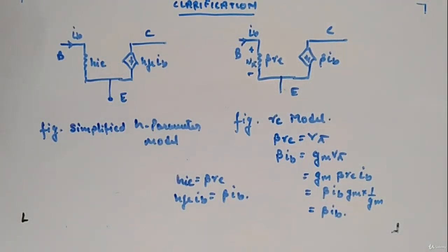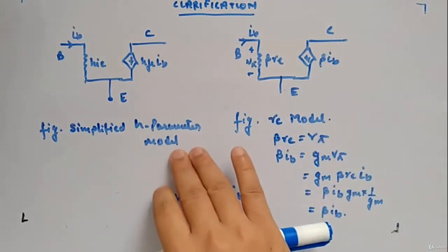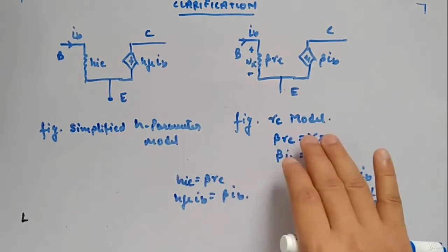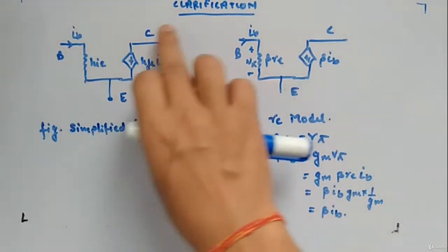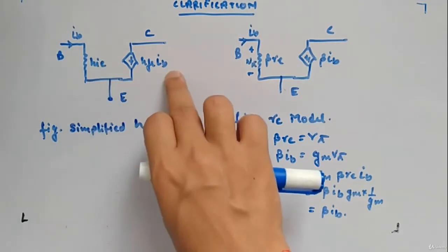Just a small clarification I want to make. I have shown two models: re model and h parameter model. This is the simplified h parameter model with base, collector, emitter, hie, hfe, ib current source.